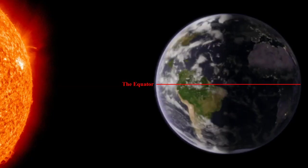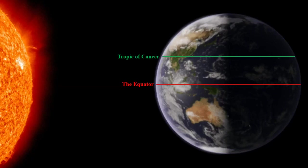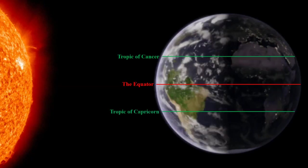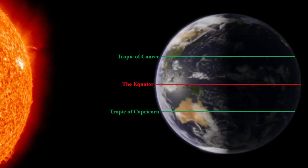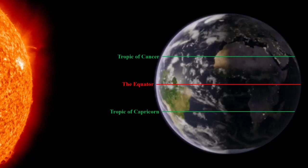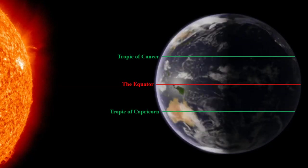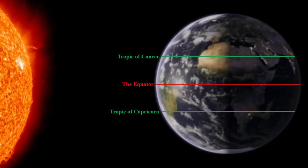So, without further ado, I give you the tropics. The Tropic of Cancer to the North, and the Tropic of Capricorn in the South. Understanding why these lines are important takes a little bit of talking about how the Earth really works, though.